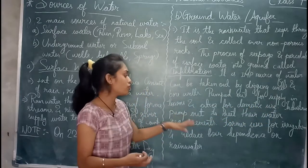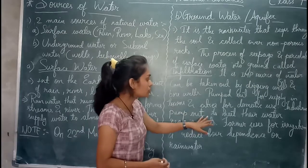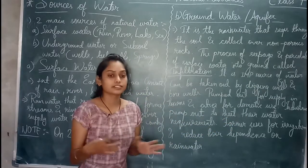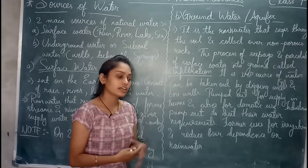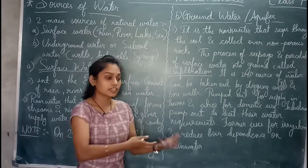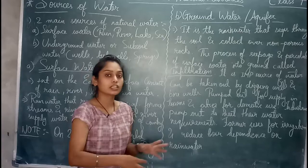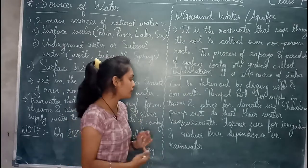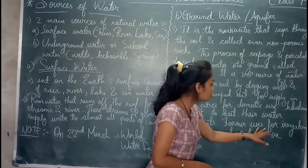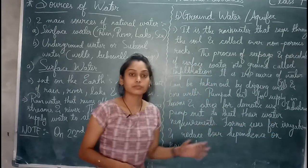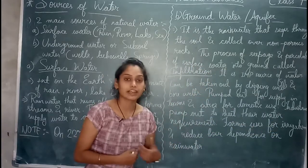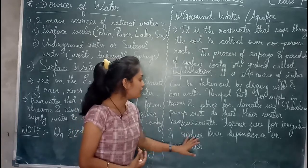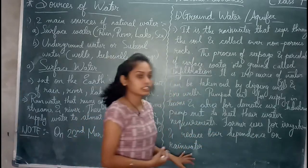Industries also pump out ground water to meet their water requirements. Industrial factories pump out ground water to fulfill their needs. Farmers also use ground water for irrigation and agricultural purposes, which reduces their dependency on rainwater.